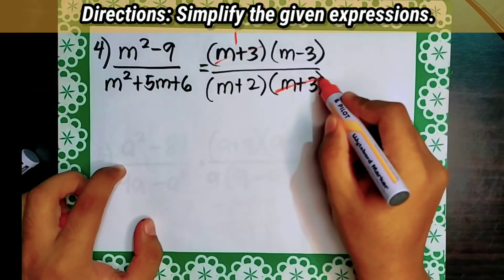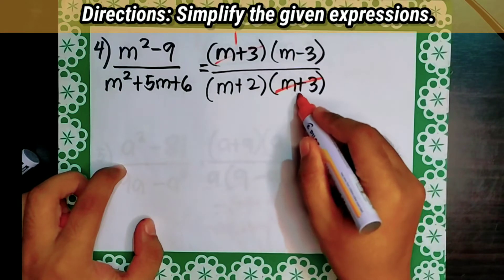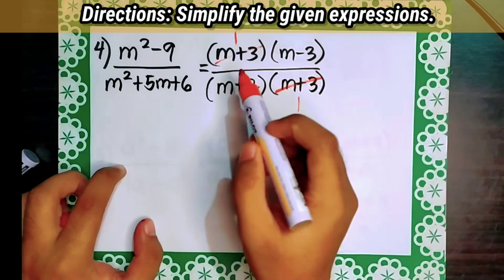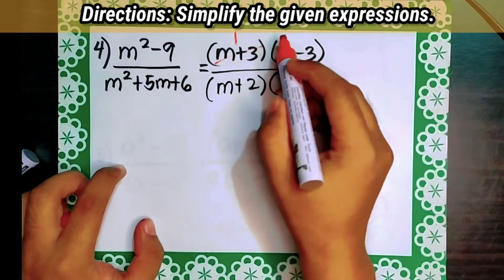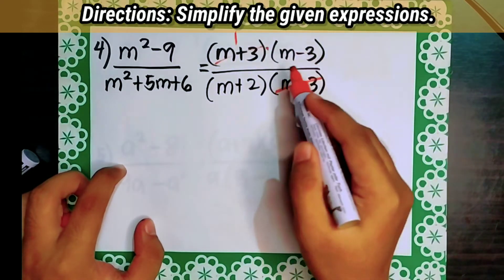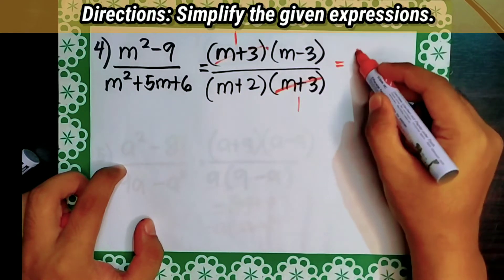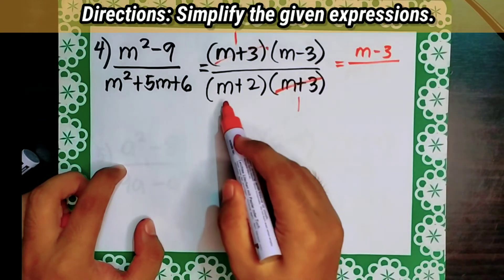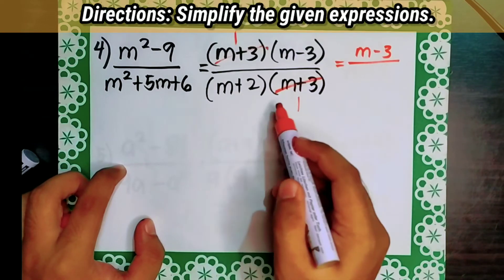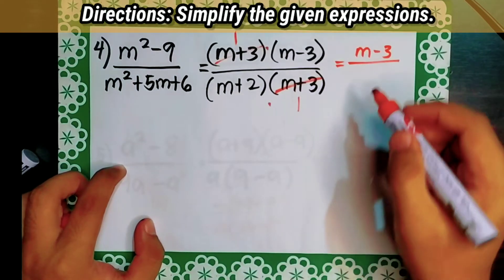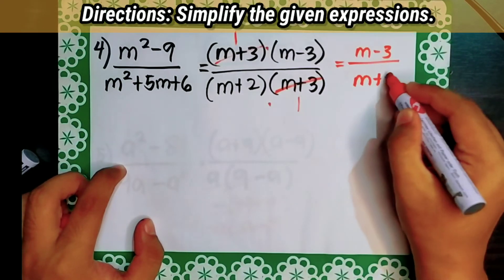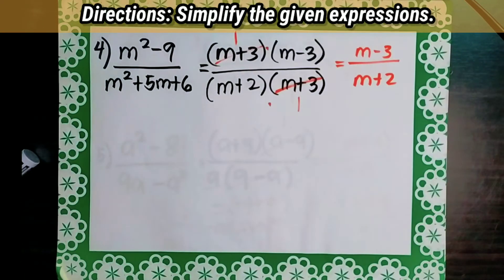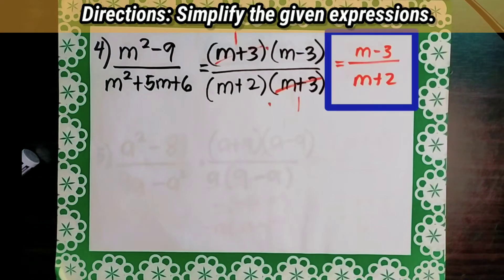And m plus 3 in the denominator is also equal to 1. So let's multiply: 1 times m minus 3 equals m minus 3, over m plus 2 times 1, which equals m plus 2. Our final answer is m minus 3 all over m plus 2.